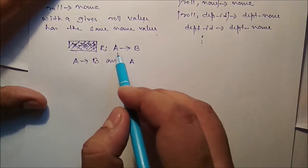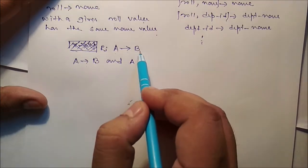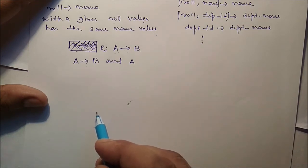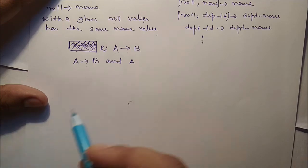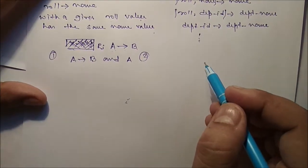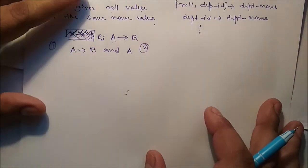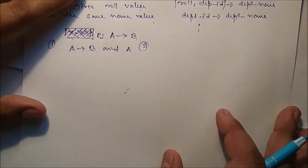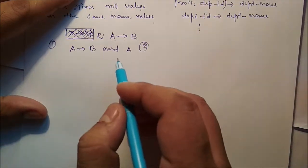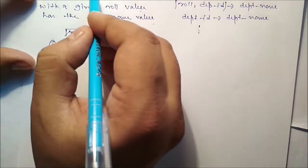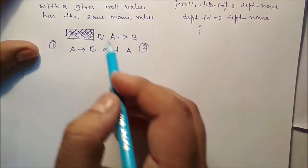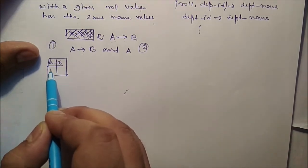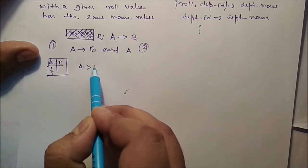Note that in a table R, if A→B exists, A is not a candidate key, and the FD is not trivial, then R will involve some redundancy. FDs represent integrity constraints and the DBMS needs to enforce them. Remember: data depends on dependency — dependency doesn't depend on data. If attribute A has distinct values, then we can blindly say A determines B.